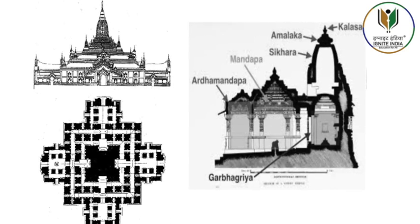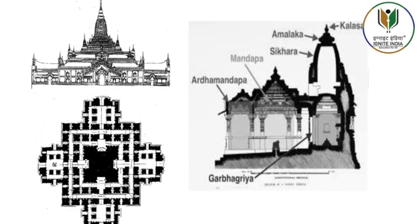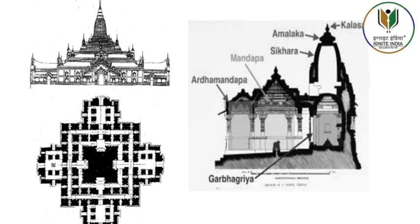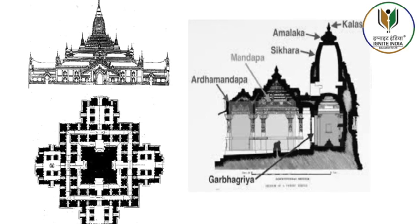The Vahana, the mount or vehicle of the temple's main deity, along with a standard pillar or dhvaja, is placed axially before the sanctum.